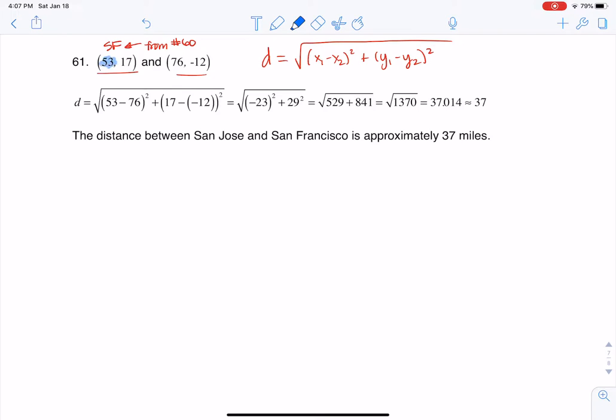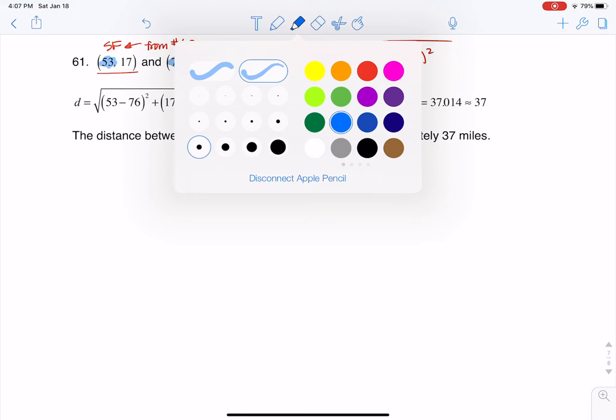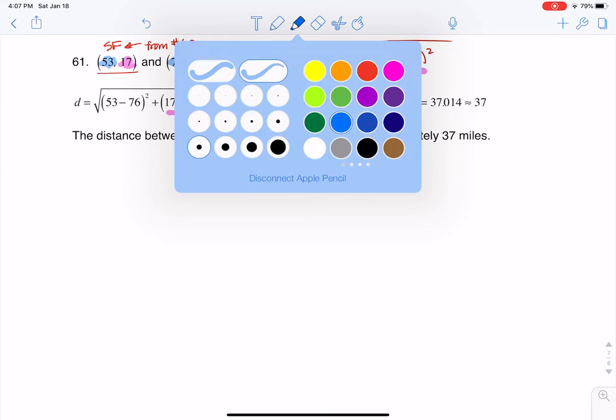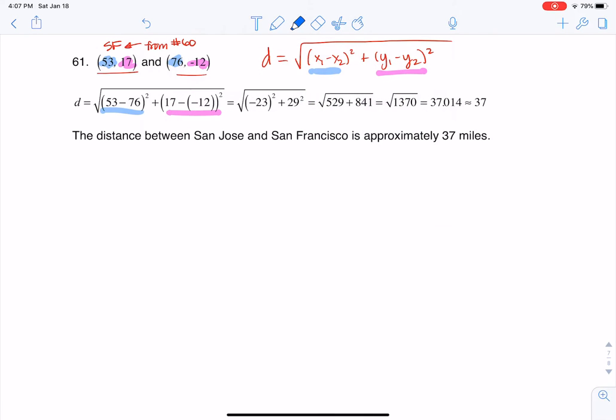At this point, I'm going to put in 53 and 76 for my respective x values, and then I'm going to put in 17 and negative 12 for my respective y values. That's what you see going on right here.